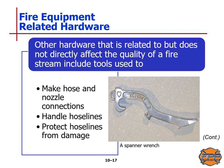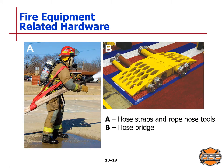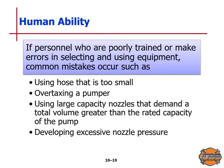Other hardware related to but not directly affecting the quality of a fire stream includes tools used to make hose and nozzle connections, handle hose lines, and protect hose lines from damage — such as hose straps and hose bridges. If personnel are poorly trained or make errors in selecting and using equipment, common mistakes include using a hose that is too small, overtaxing a pumper, using large capacity nozzles that demand a total volume greater than the rated capacity of the pump, or developing excessive nozzle pressure.